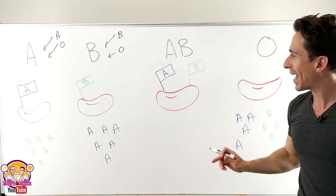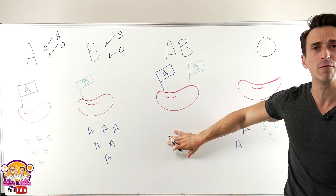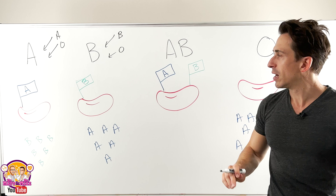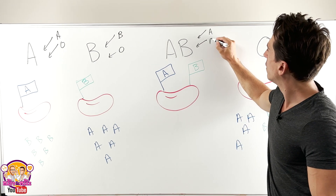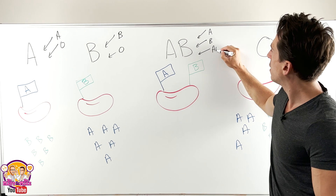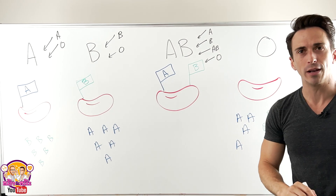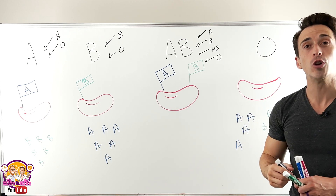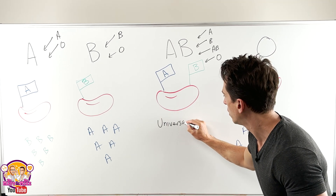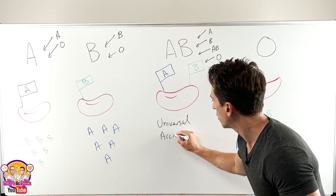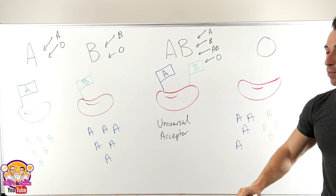What about AB? Well, there are no antibodies, so AB can receive blood from anyone. AB can receive A blood, B blood, AB blood, and O blood. That is what we call the universal acceptor. So if somebody is type AB, they can receive all blood types.